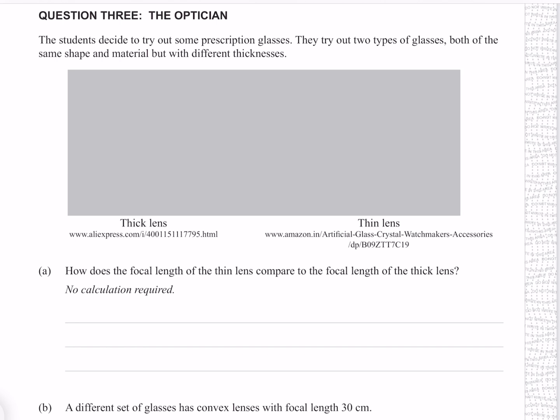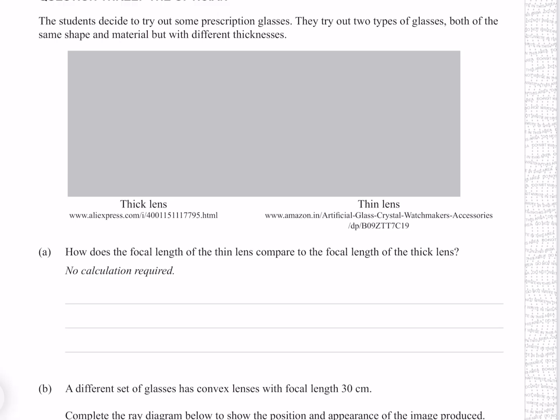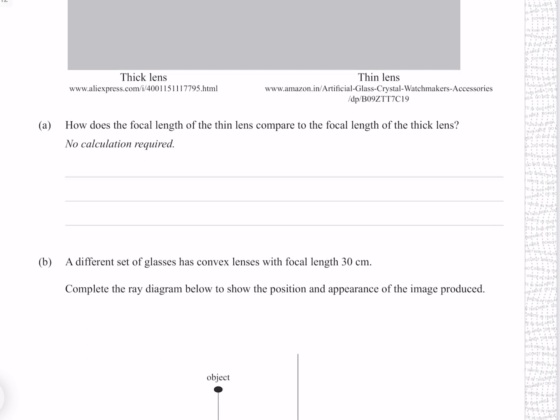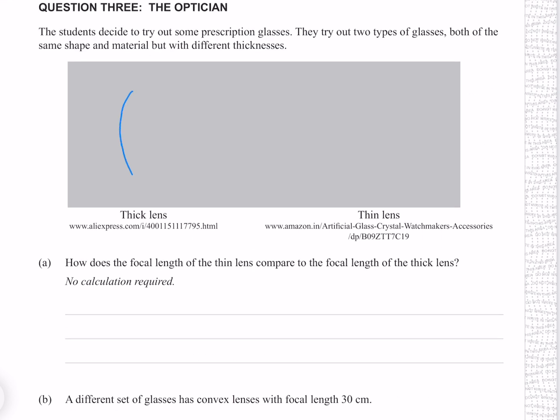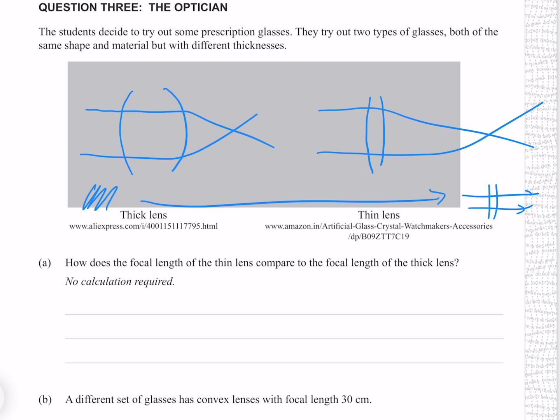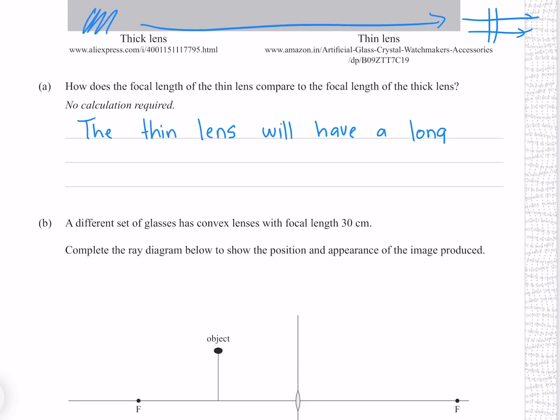Question three. The students decide to try out some prescription glasses. They try out two types of glasses, both of the same shape and material, but with different thicknesses. How does the focal length of the thin lens compare to the focal length of the thick lens? If we have a thick lens as opposed to a thin lens, the thick lens is going to refract a lot more aggressively, whereas the thin lens is going to refract much more gently. One way to think about this is this is a continuum from a circular lens all the way to basically a window pane, which is to say all the way from maximum refraction to no refraction at all. The thin lens will have a longer focal length.